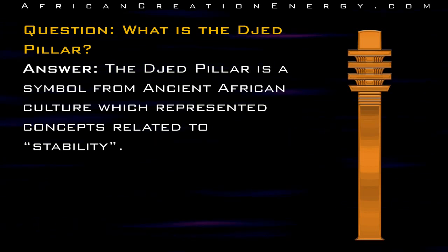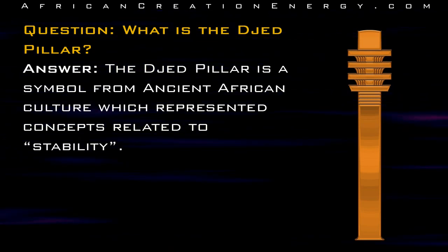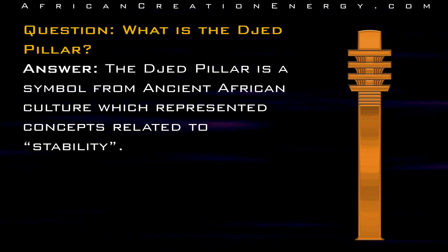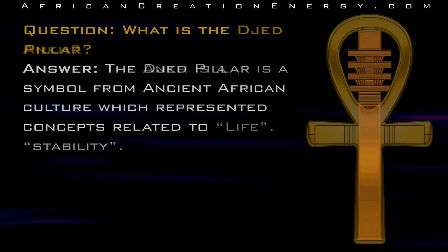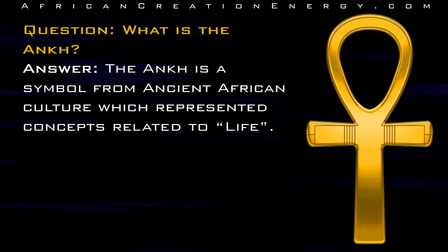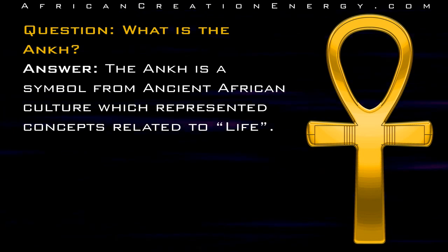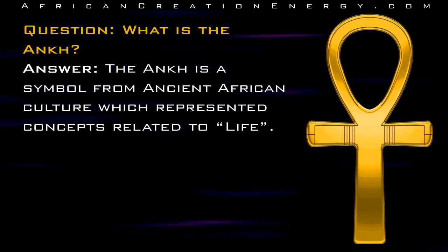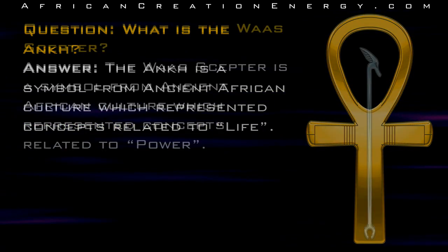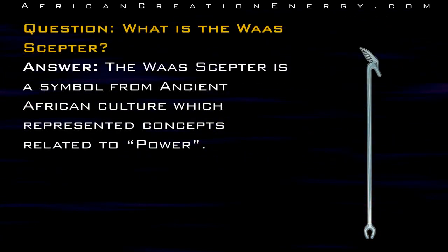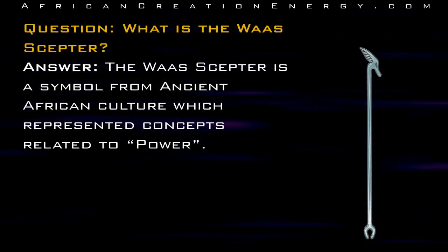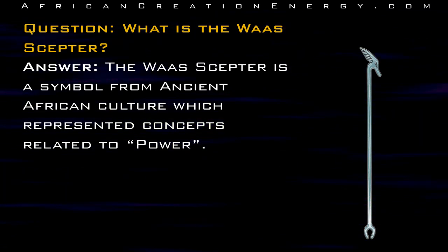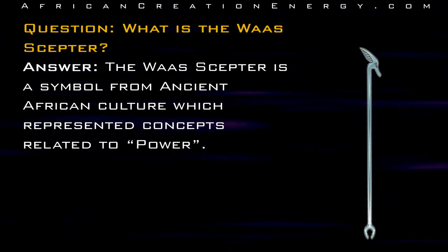Question: What is the Jed Pillar? Answer: The Jed Pillar is a symbol from ancient African culture which represented concepts related to stability. Question: What is the Ankh? Answer: The Ankh is a symbol from ancient African culture which represented concepts related to life. Question: What is the Was Scepter? Answer: The Was Scepter is a symbol from ancient African culture which represented concepts related to power.